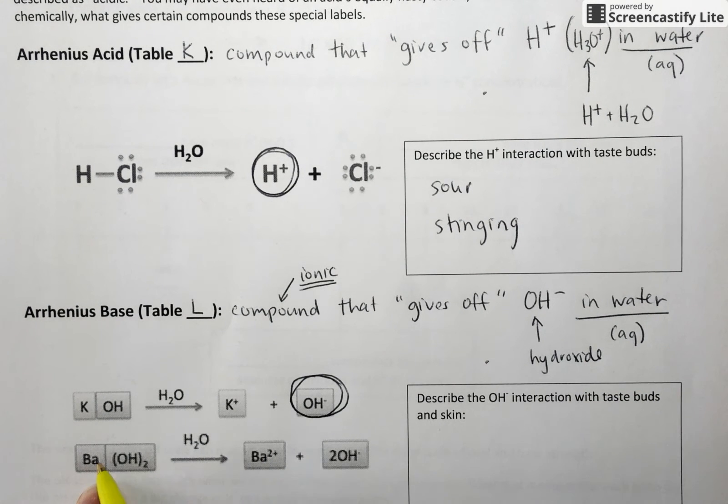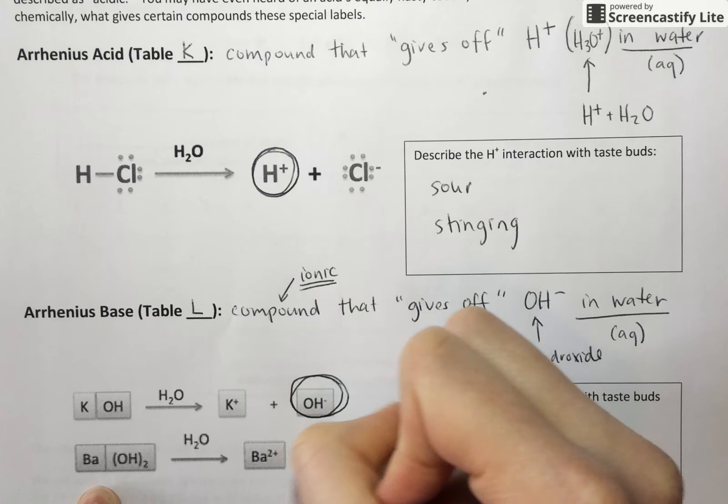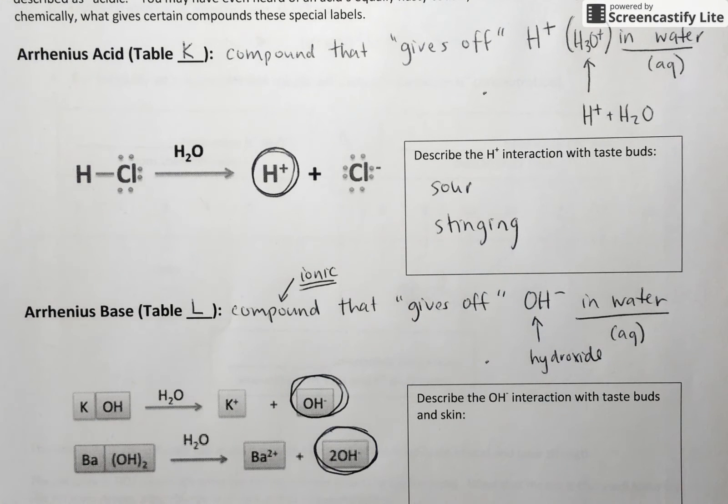And again, same deal with barium hydroxide. But this time, since there are two hydroxide ions bound to this barium, when it dissociates, we're going to get twice as much hydroxide in solution.